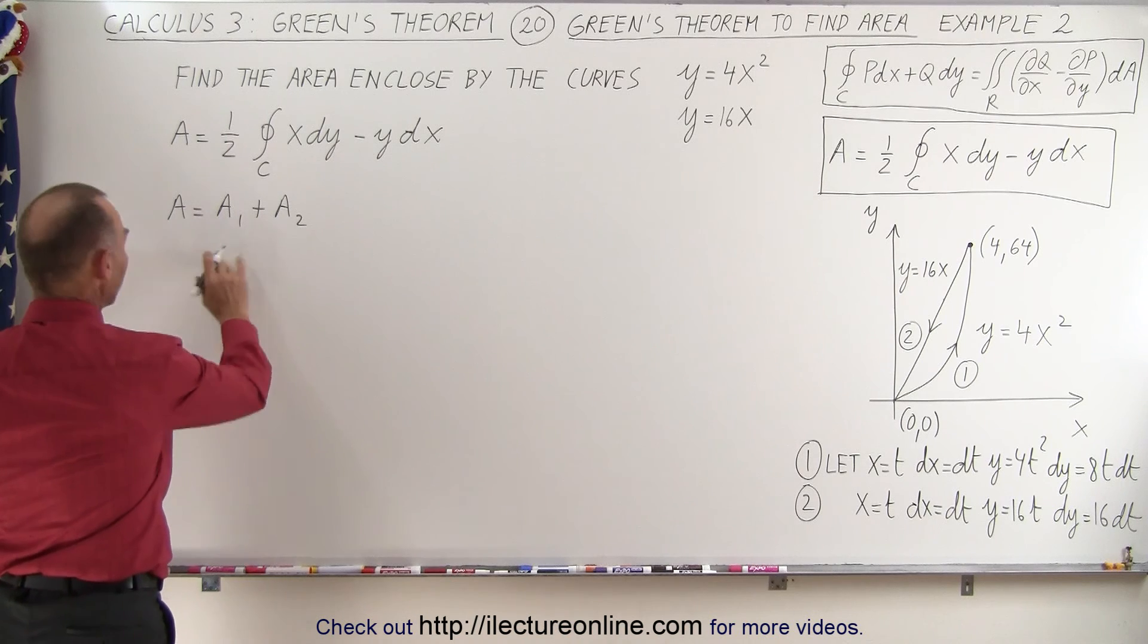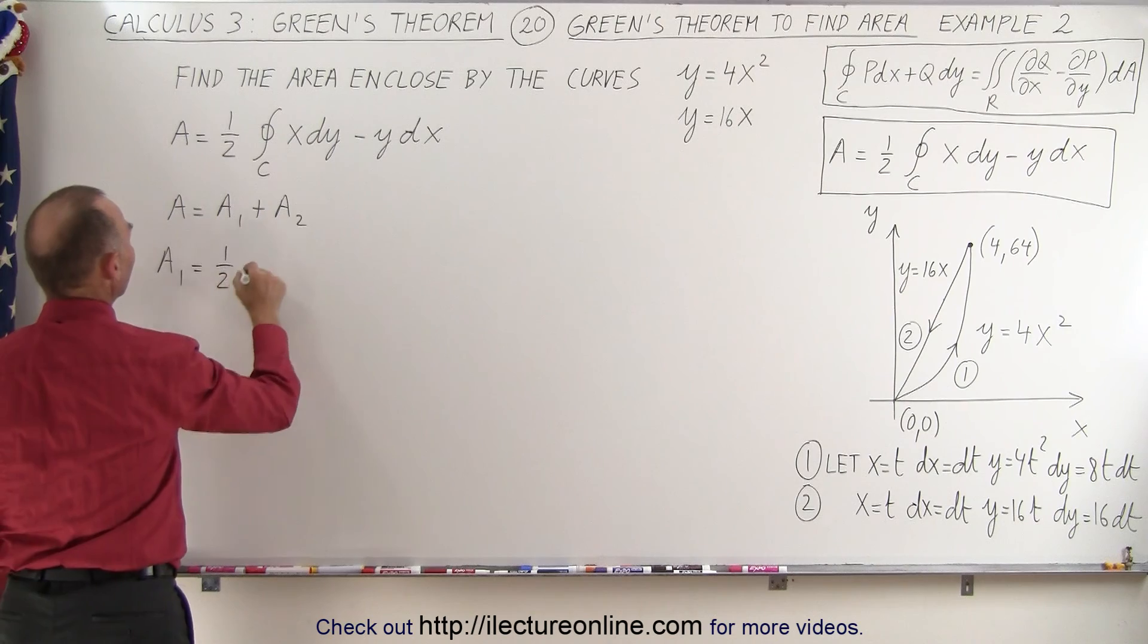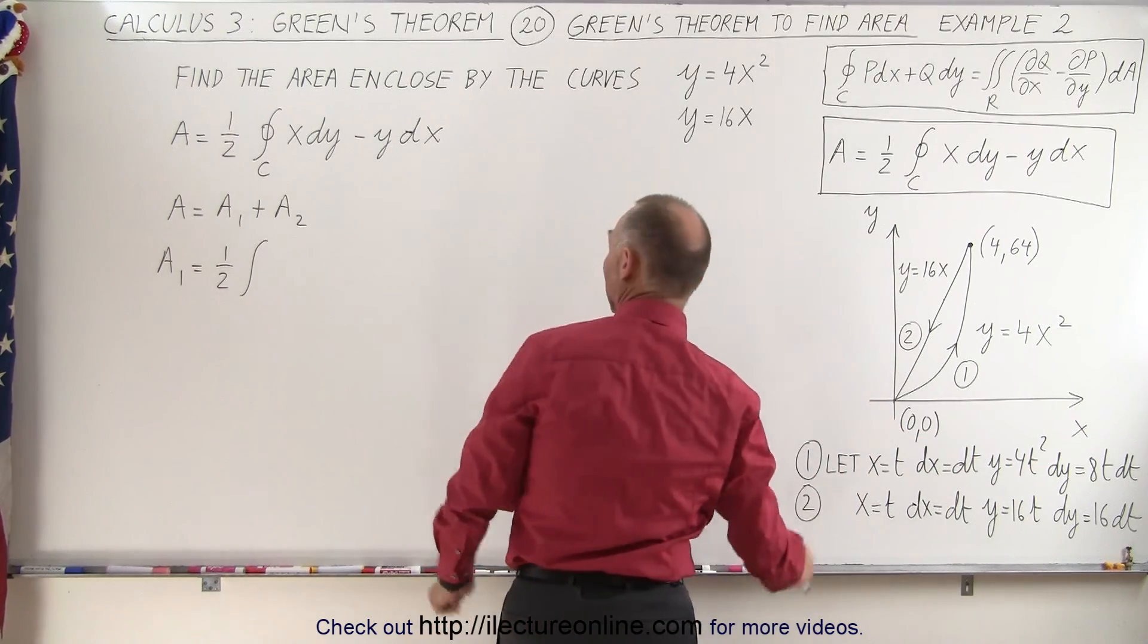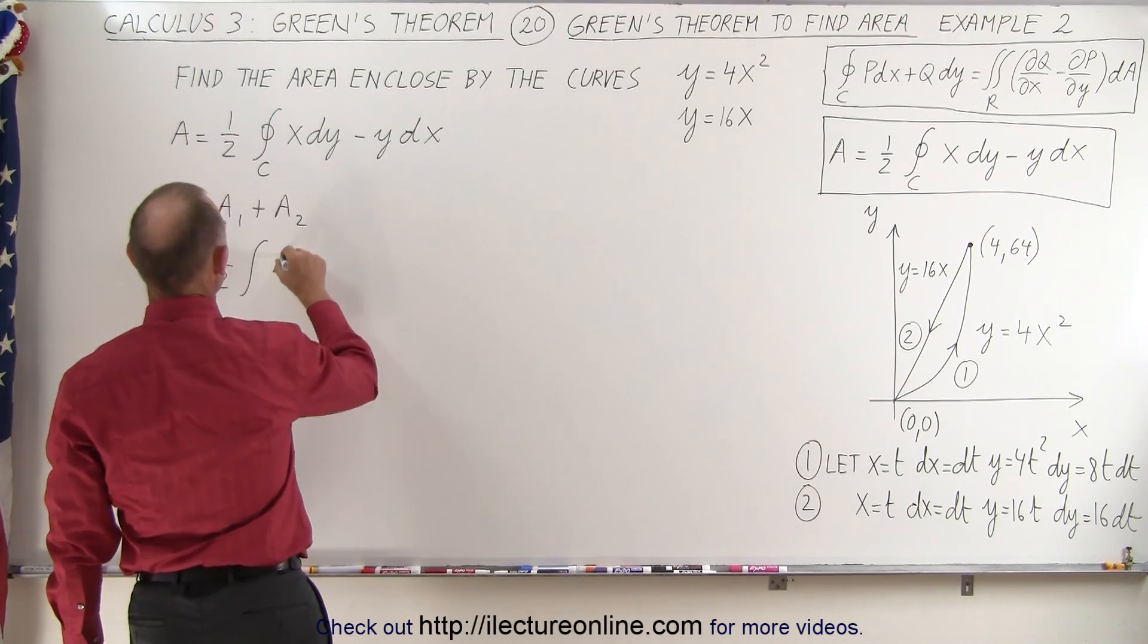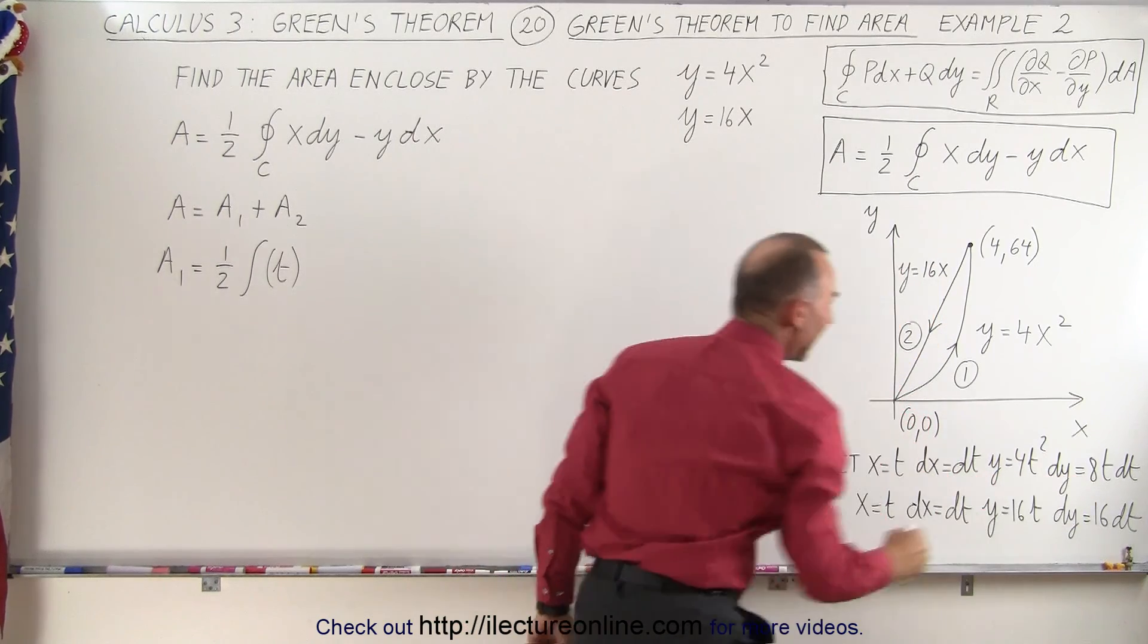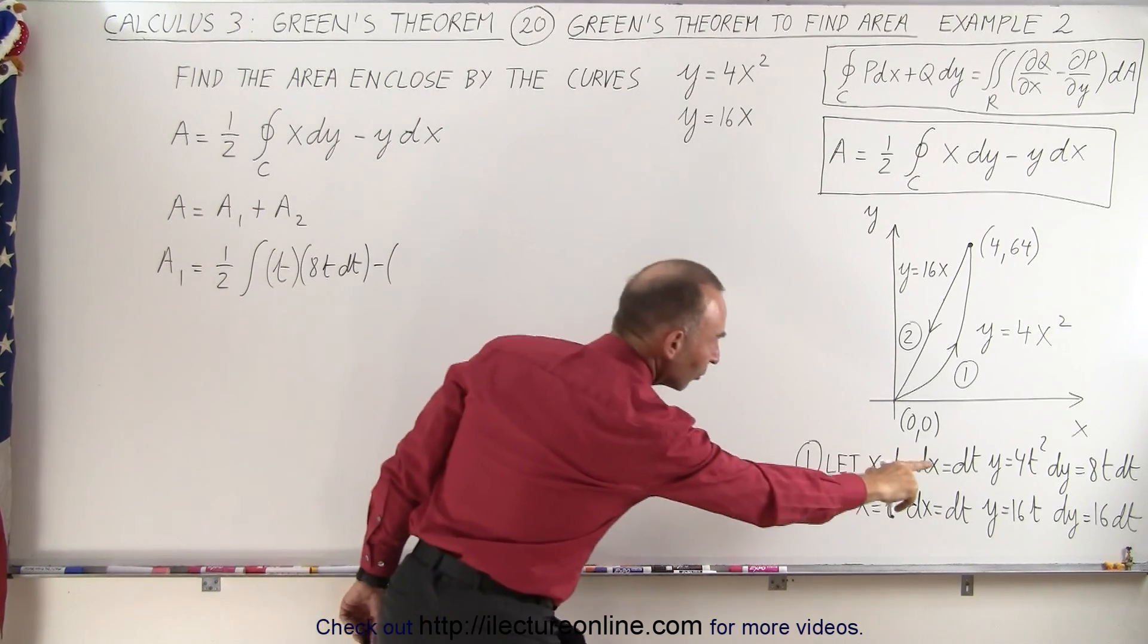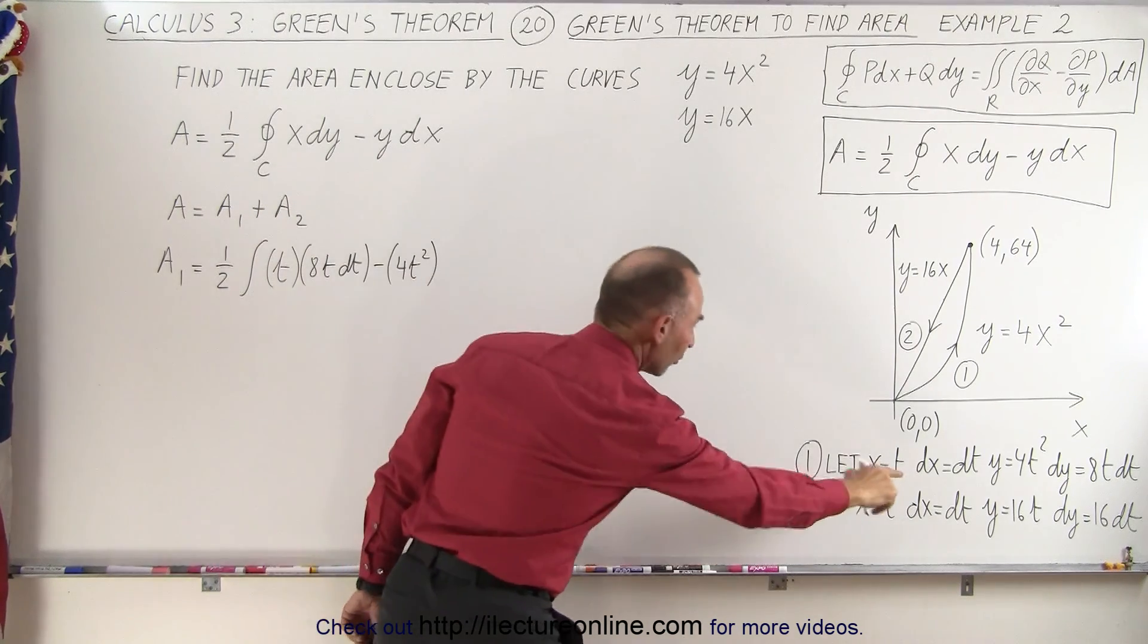So finding a1 along the first curve, that is going to be equal to one-half times the integral along that curve. Now we're using the parametric equations, which are defined right here for curve number one. So notice that for x, we have t. So we have t multiplied times dy, and dy here is going to be 8t dt. Subtract from that y, which is 4t squared, times dx, which is going to be dt.